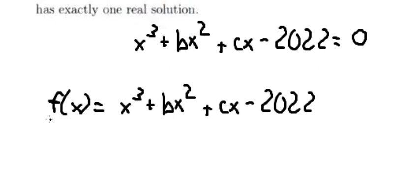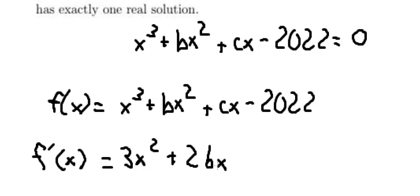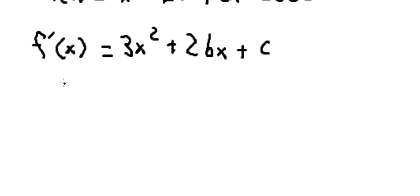Now we need to find the first derivative of the function. First derivative of x to the power of 3, we have 3x squared. First derivative of this one, you get 2bx. And this one, you get c. Now we need to put the first derivative of the function equal to zero.